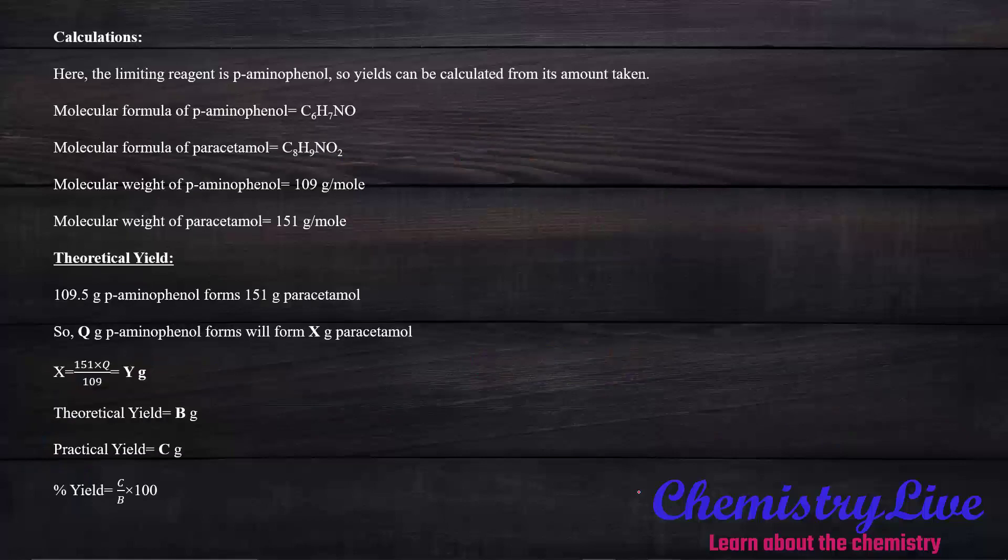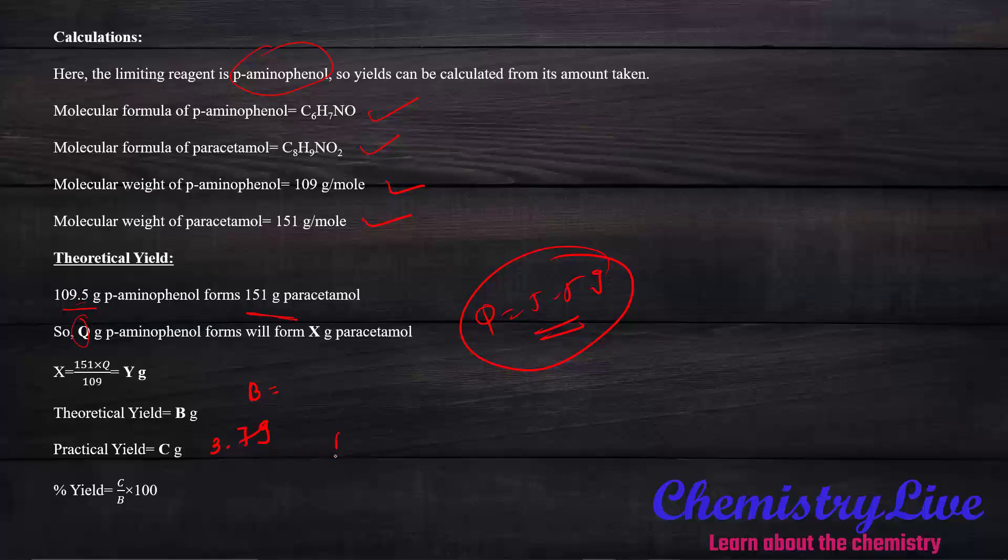Now for the calculation. The starting material is para-aminophenol with molecular formula C6H7NO. Paracetamol is C8H9NO2. The molecular weight is 109 grams per mole for para-aminophenol and 151 grams per mole for paracetamol. If we get 109.5 grams para-aminophenol, we will get 151 grams of paracetamol. In our case, 5.5 grams gives a theoretical yield B. With the practical yield of 3.7 grams, we calculate the percentage yield.